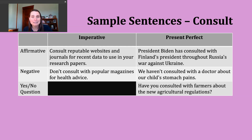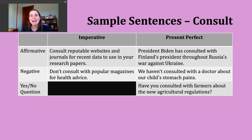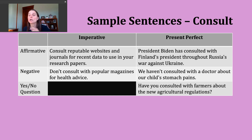Now let's talk about the present perfect. We use this tense in a couple of ways: to describe an action that occurred at some unknown point in the past, or to describe an action that started in the past and is continuing into the present. To form it, pay attention to the subject. If the subject is I, you, we, or they, use 'have' plus the participle form. If the subject is he, she, or it, use 'has' plus the participle form. Affirmative example: 'President Biden has consulted with Finland's president throughout Russia's war against Ukraine.'